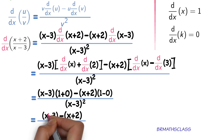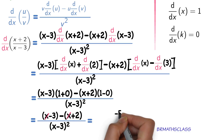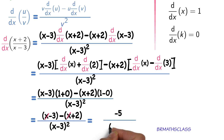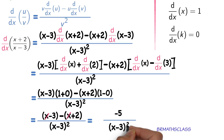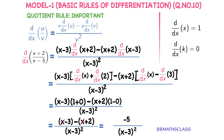Observe the numerator: the plus x and minus x will get cancelled. What is remaining in the numerator? Minus 3 minus 2 is minus 5, divided by (x minus 3) whole squared. Therefore, the derivative of (x plus 2) divided by (x minus 3) is minus 5 divided by (x minus 3) whole squared.